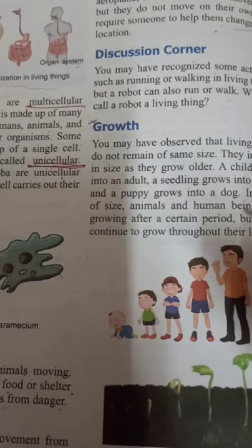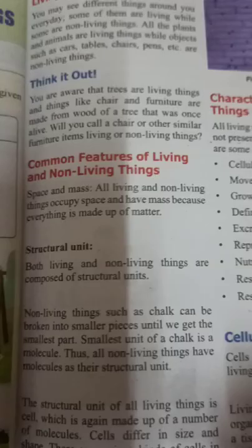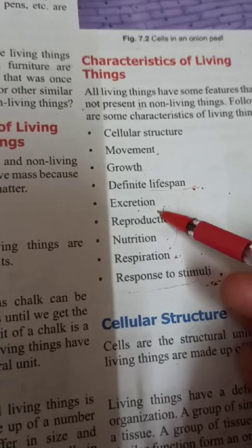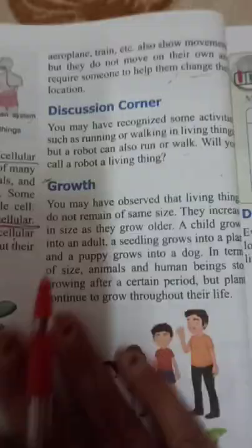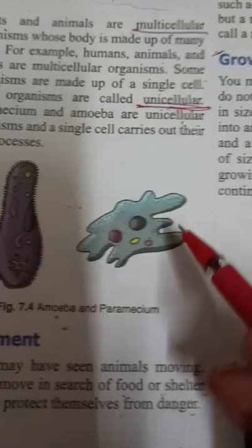Jai Guru Dev, dear students and children. We have already started Chapter 7 — Living and Non-Living Things. Under this chapter, I have explained in short the characteristic features of living and non-living things. From these features, we have already studied the first one, cellular structure, and the second, movement in various organisms.